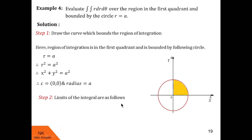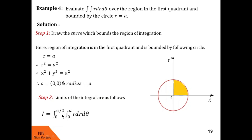Now let us find the limits for r and theta. In this region, r varies from 0 to the circle, so r goes from 0 to a. For theta, the region touches the positive x-axis (θ = 0, lower limit) and the positive y-axis (θ = π/2, upper limit). The final answer of this integral follows from evaluating with these limits.